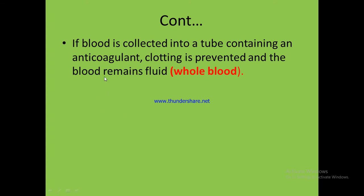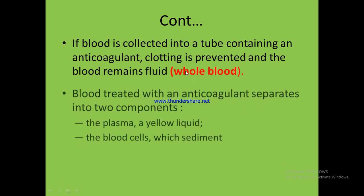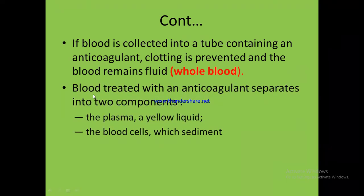In another approach, if blood is collected into a tube containing an anticoagulant, clotting is prevented and the blood remains as whole blood. When inverting the tube, the cells are suspended in the plasma. When blood mixed with anticoagulant is centrifuged, the upper portion becomes plasma and the lower portion becomes the blood cells.